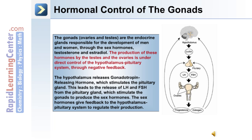The gonads are endocrine organs that include the ovaries and testes, responsible for development of males and females through the sex hormones testosterone and estradiol. The production of these hormones is under direct control of the hypothalamus-pituitary system through negative feedback. The hypothalamus releases gonadotropin releasing hormone, which stimulates the pituitary to release LH and FSH. These stimulate the gonads to produce sex hormones, which in turn feed back to the hypothalamus-pituitary system to regulate their own production.